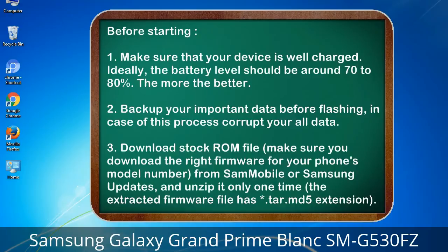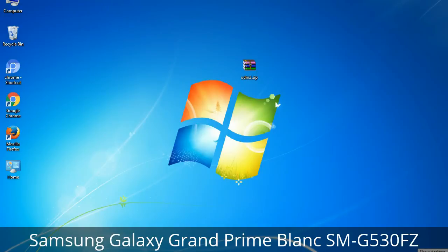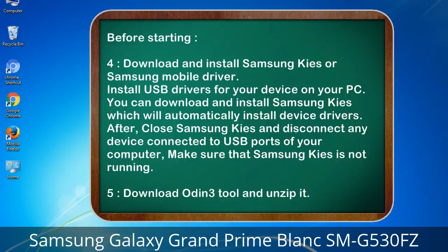3. Download the stock ROM file. Make sure you download the right firmware for your phone's model number from Sammobile or Samsung Updates, and unzip it only one time. The extracted firmware file has a *.tar.md5 extension. 4. Download and install Samsung Kies or Samsung mobile driver to install USB drivers for your device on your PC. After installing, close Samsung Kies and disconnect any device connected to USB ports, making sure Samsung Kies is not running. 5. Download Odin 3 tool and unzip it.